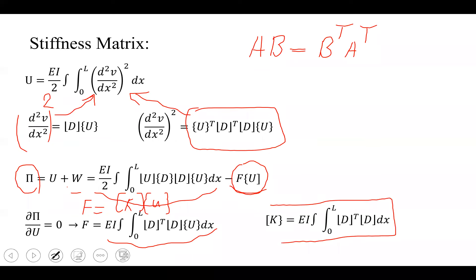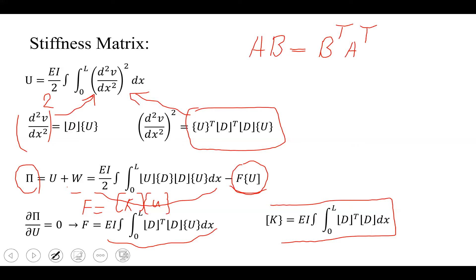So the stiffness matrix for beam elements is K = EI times the integral of D^T D dx, where D is the second derivative of the shape function. Once the stiffness matrix is found, the procedure is the same regardless of which FEA problem we are solving: find the local stiffness matrix, then the global stiffness matrix, then the loading, then the nodal displacements, then reaction forces, stresses, strains, and so forth. Finding the stiffness matrix is the first and most important task.